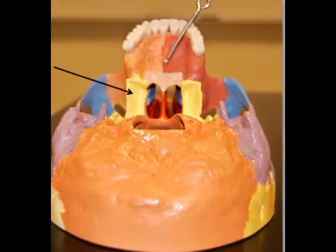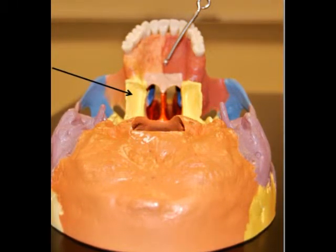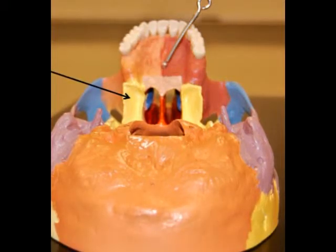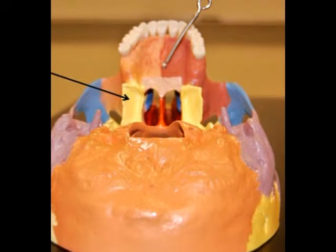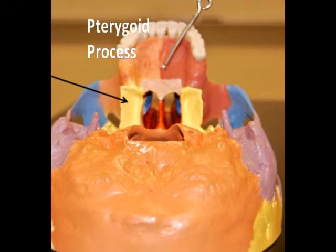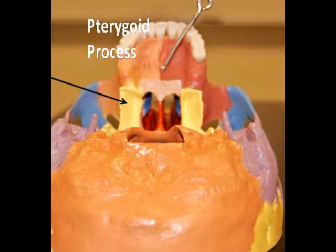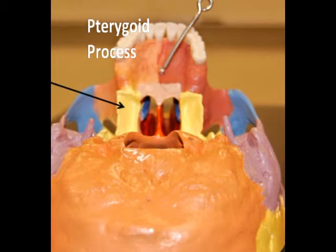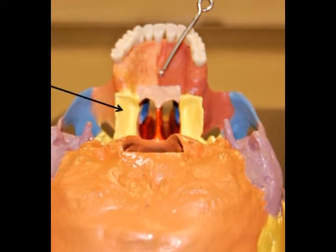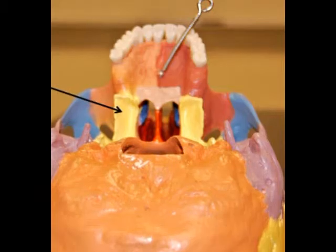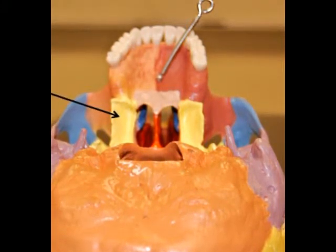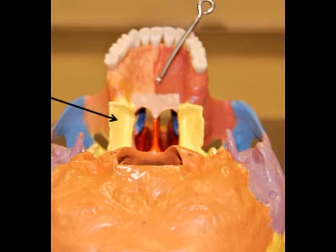Our final bony landmark of the sphenoid bone are the legs of the bat, known as the pterygoid processes. These project inferiorly from the body and greater wings and form the lateral posterior nasal cavity. They are also the points of attachment for several muscles that move the mandible.